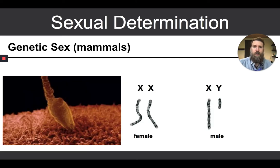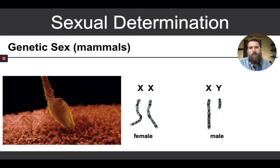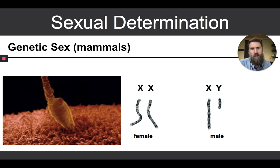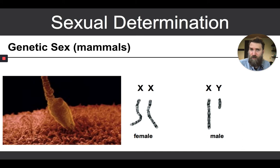So let's first start with chromosomes. When I talk about chromosomes, I'll be talking about genetic sex, or chromosomal sex. I'll be discussing this in the context of mammals, which involves the X and Y chromosomes, or the two different sex chromosomes.